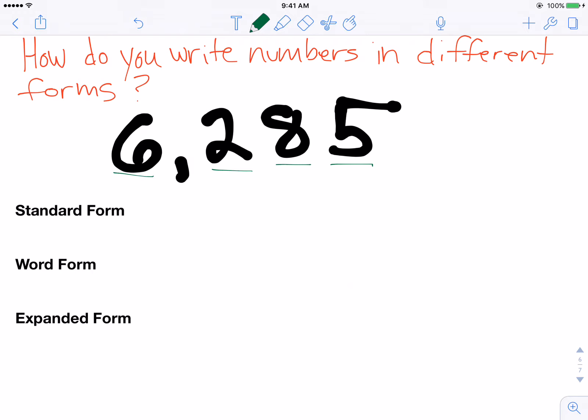The first form is called standard form. So right now, this number is already written in standard form. Standard form is just writing the number using regular digits. So standard form of 6,285 is exactly how it's written, 6,285.